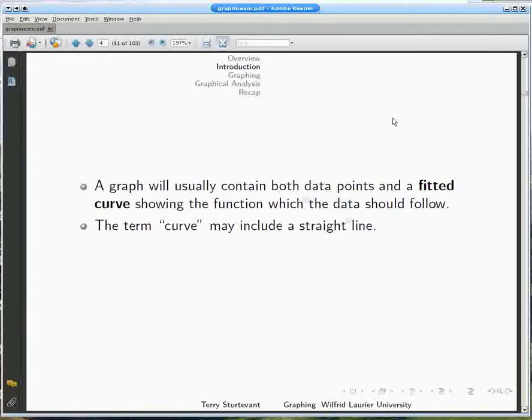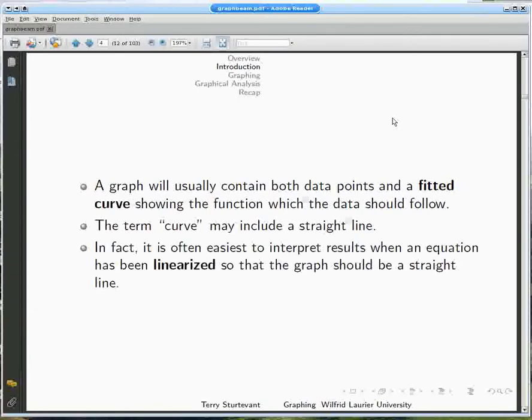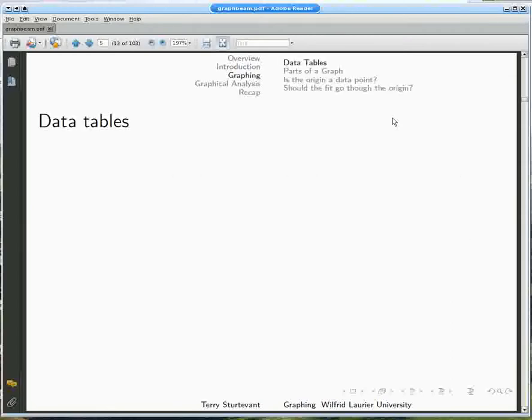A graph should include data points and some function which the data points are expected to follow. The function could be a straight line. Straight line graphs are especially useful.